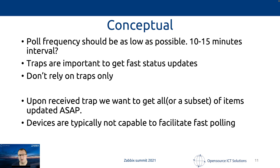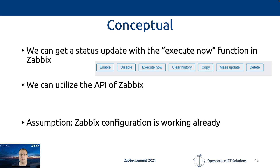If we combine those two ideas — what if we tell Zebix: if you receive a trap, only then get all other information as well, so that we have a fast status update of the whole device and not only the event? We don't want to set polling to every few seconds because the device probably can't handle it, so we need a different mechanism. It's actually built in already: go to Configuration Hosts, find the correct host, select all SNMP items, and hit the Execute Now button. Within a few seconds, the Zebix server will start pulling those metrics, giving you an up-to-date status.